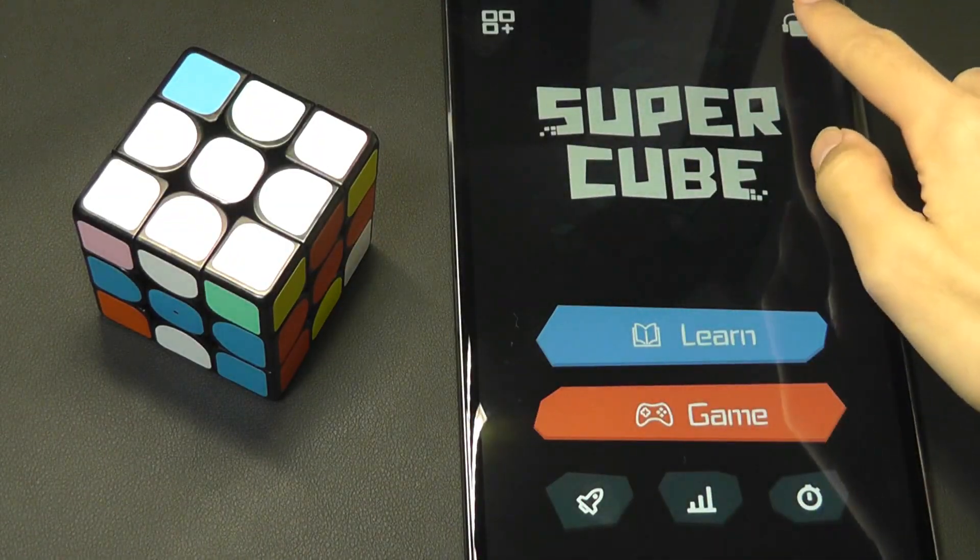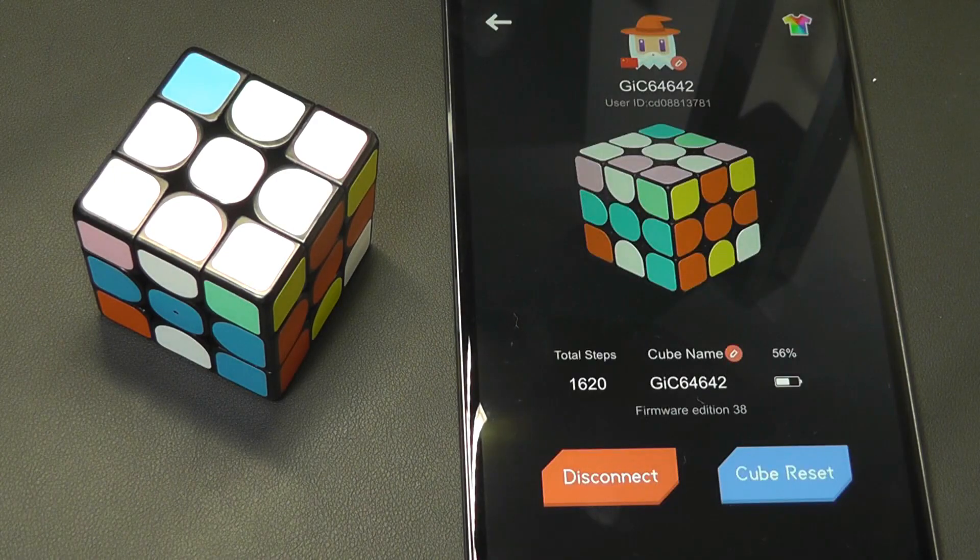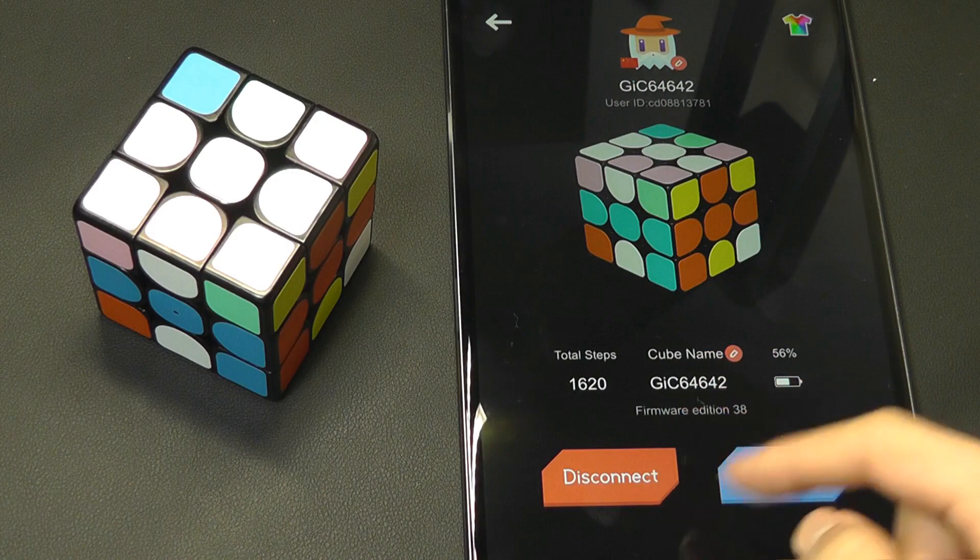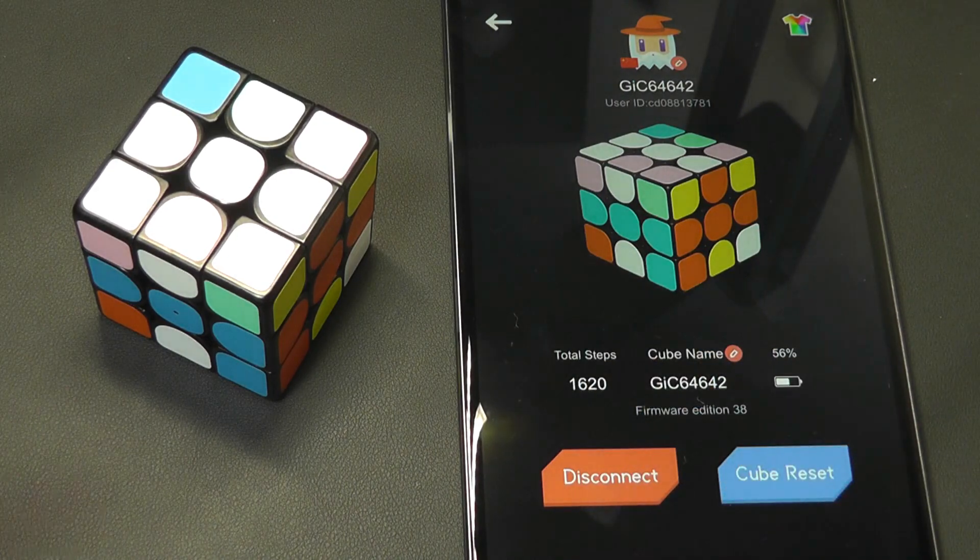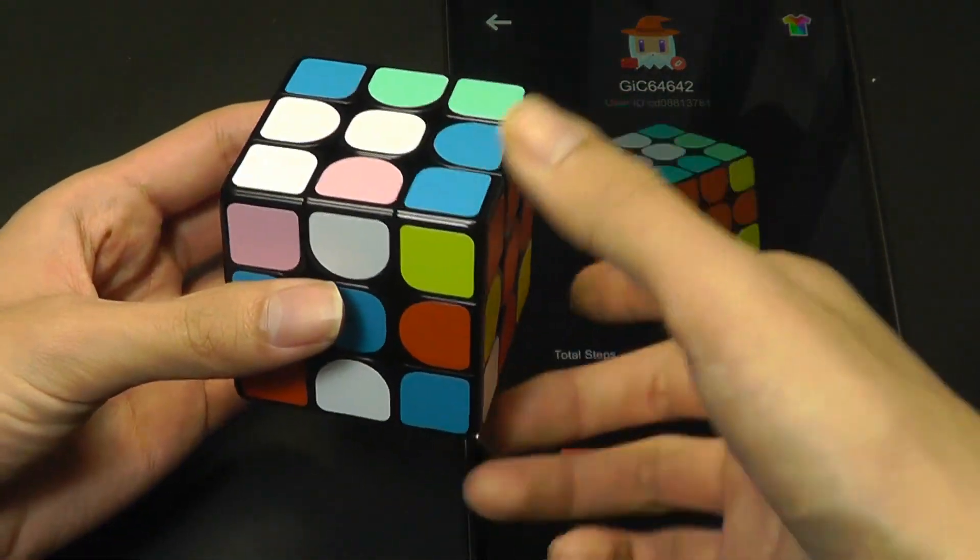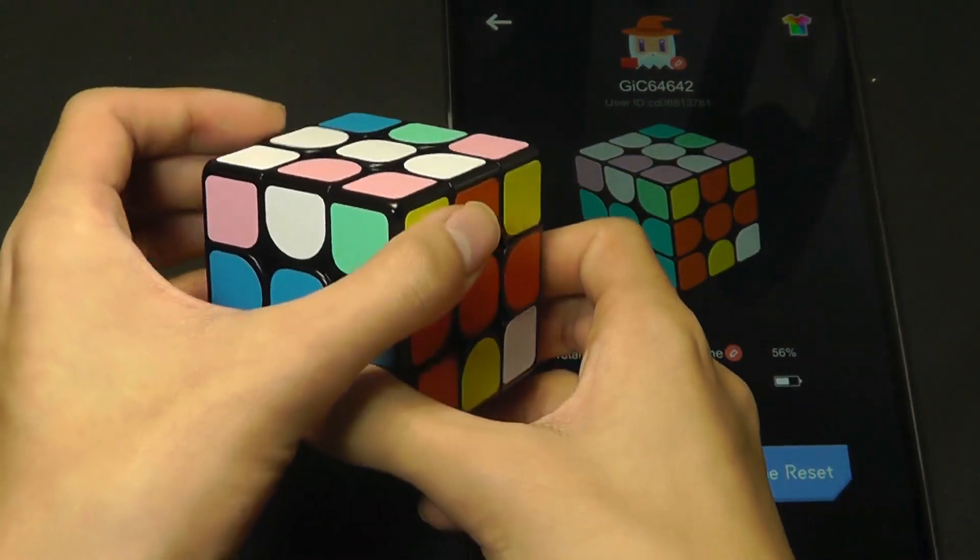Within the interface, I can tap on this top icon to take a look at the cube properties. It's going to tell me my battery life remaining, 56%, the cube's name, and the number of steps I've taken since this cube was new, so 1620 since I've already played around with it for a little bit.